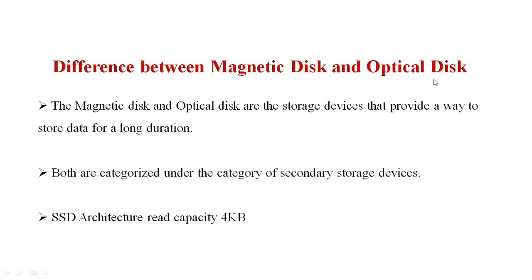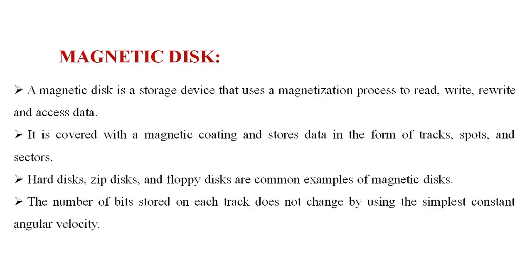Next, what is the difference between magnetic disk and optical disk? Magnetic disk and optical disk are storage devices that provide a way to store data for a long duration. Both are categories of secondary storage. The SSD read capacity is 4K.